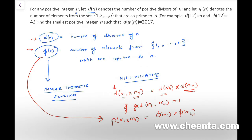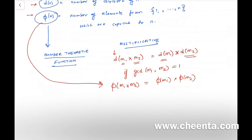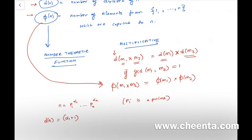Each of these functions d(n) and φ(n) could be discussed in a separate video. φ(n) has a special name — it's called Euler's totient function. Now, if n = p₁^α₁ · p₂^α₂ · … · pₖ^αₖ is the prime factorization of n, then d(n) = (α₁+1)(α₂+1)·…·(αₖ+1).